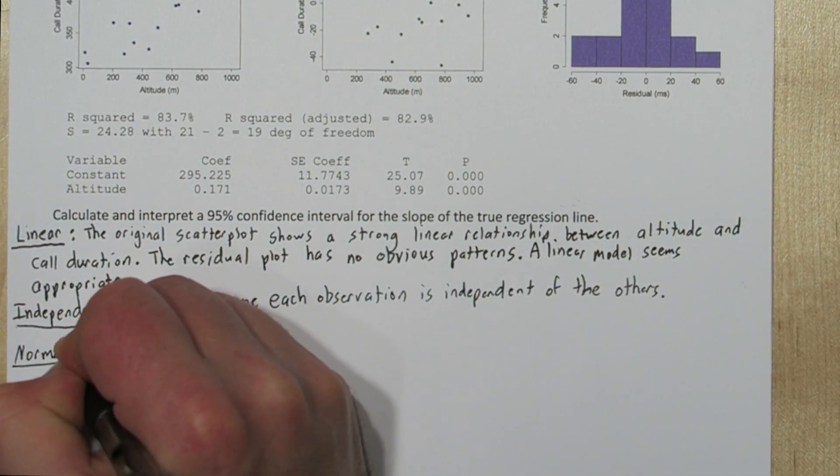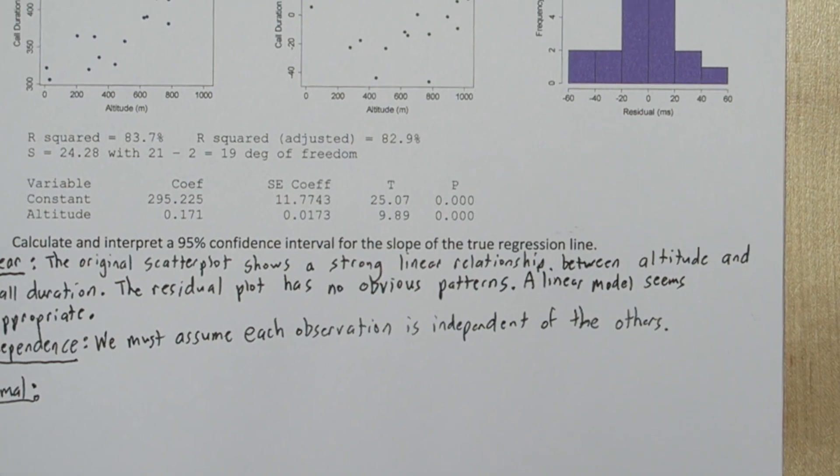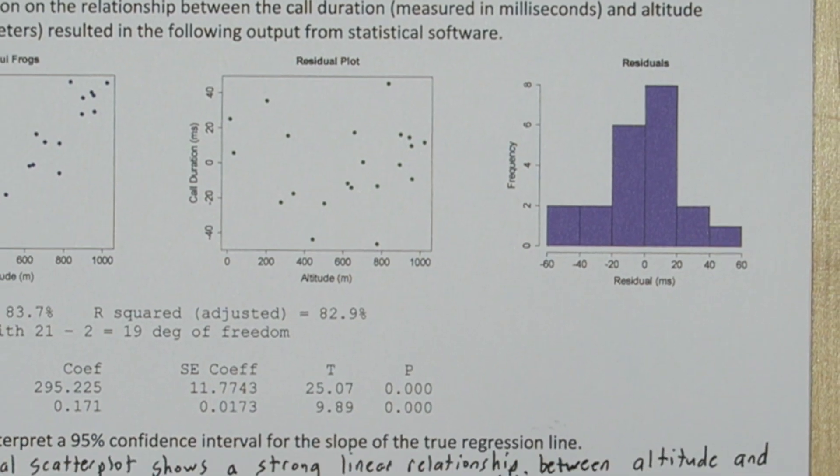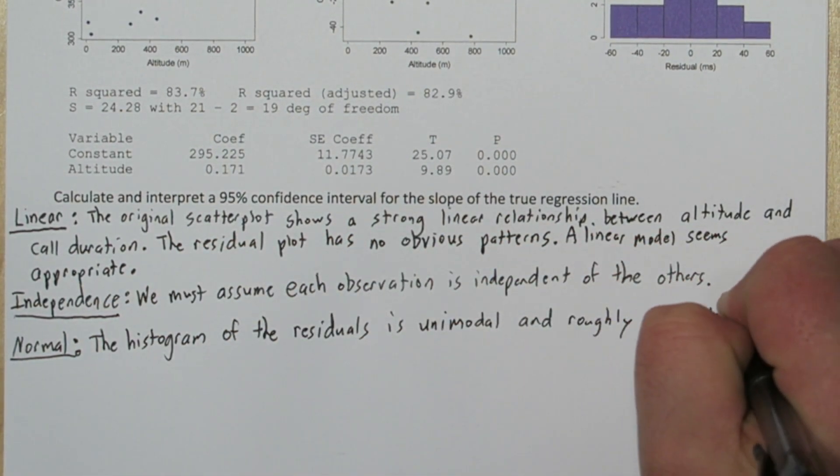For the normal condition, we have to check that the residuals are approximately normally distributed, and we have a histogram of the residuals. The histogram's unimodal and roughly symmetric, so I think it's safe to say the residuals might be normally distributed.